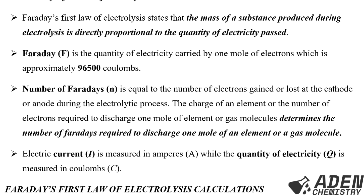Electric current is measured in amperes, written as capital A, while the quantity of electricity, written as Q, is measured in Coulombs, written as capital C.